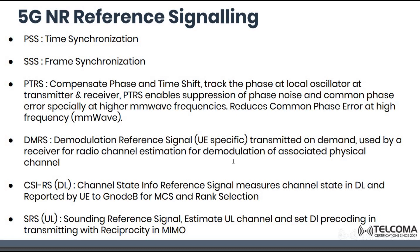CSI-RS (Channel State Information Reference Signal) measures the channel state in the downlink and is reported by the UE to the gNodeB. It is used to measure RSRP and RSRQ for a particular cell, so that the gNodeB can allocate a proper modulation and coding scheme (MCS) and perform rank selection for MIMO.